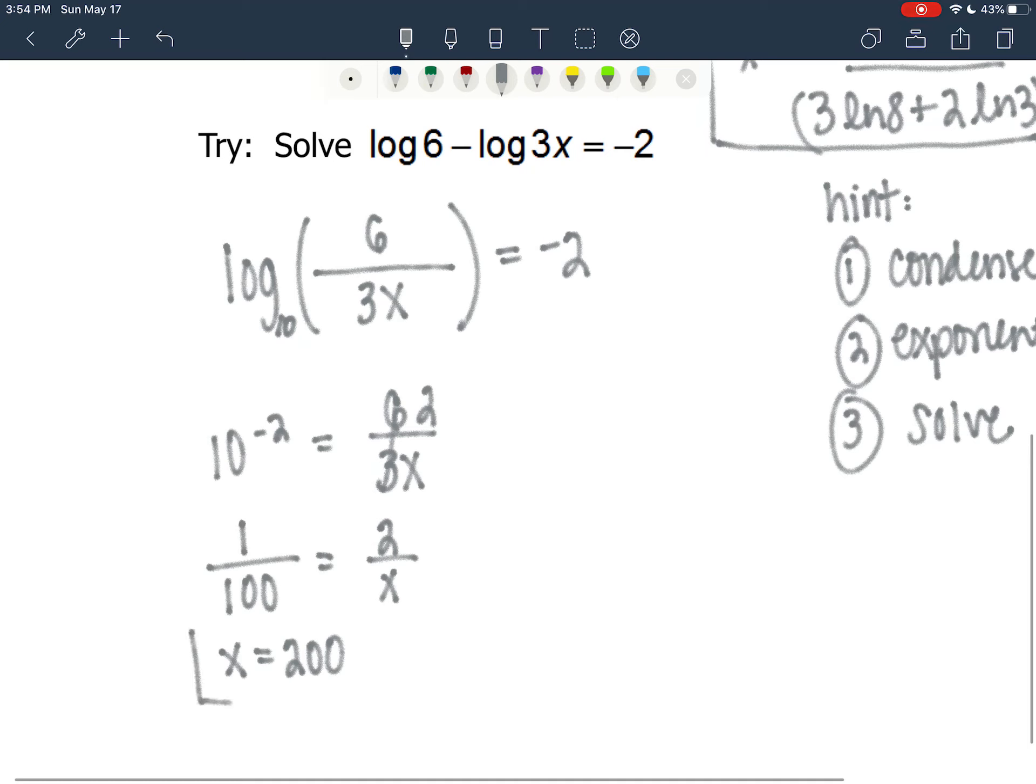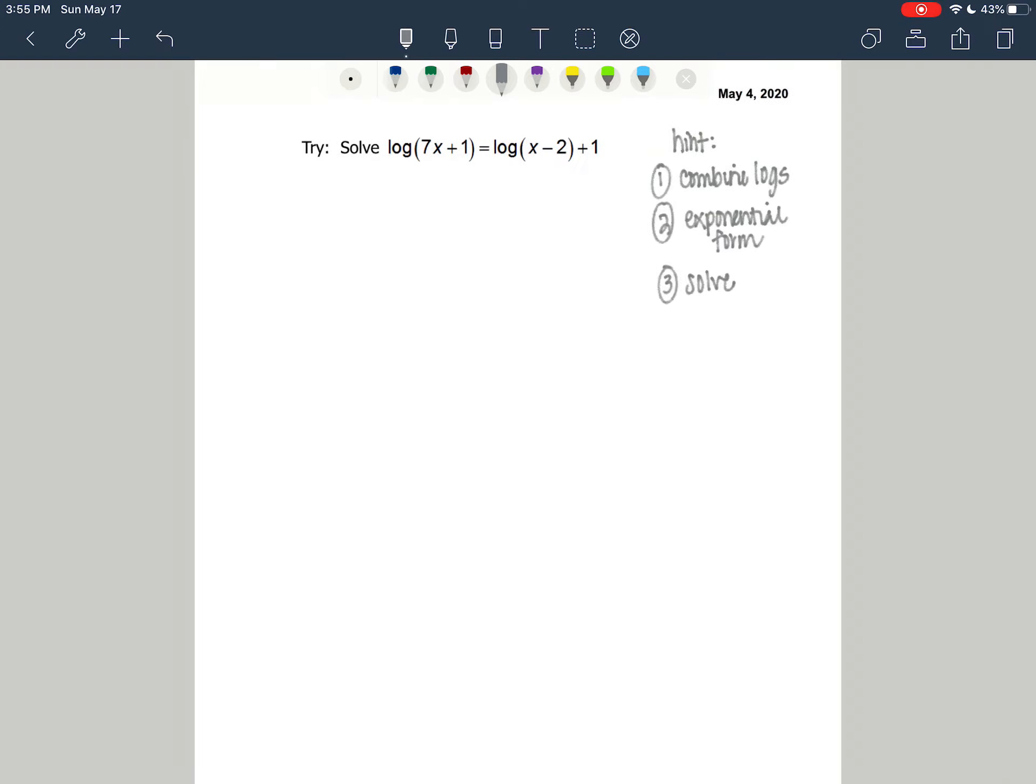Now I'm going to check to make sure that x being 200 keeps a positive argument, and it indeed does. Therefore, x equals 200 is our answer. So if you got that, excellent work.